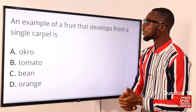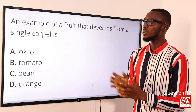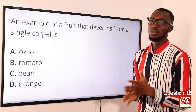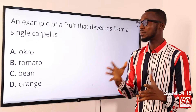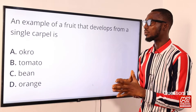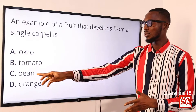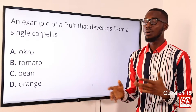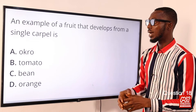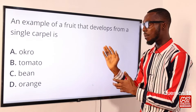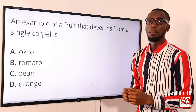An example of a fruit that develops from a single carpel is what? A single carpel can also be referred to as a monocarpel. Examples like cowpea and maize. Syncarpel — two or more carpels fused together to form a structure — that would be okra, tomato and pawpaw. So the correct option here is option C for bean.